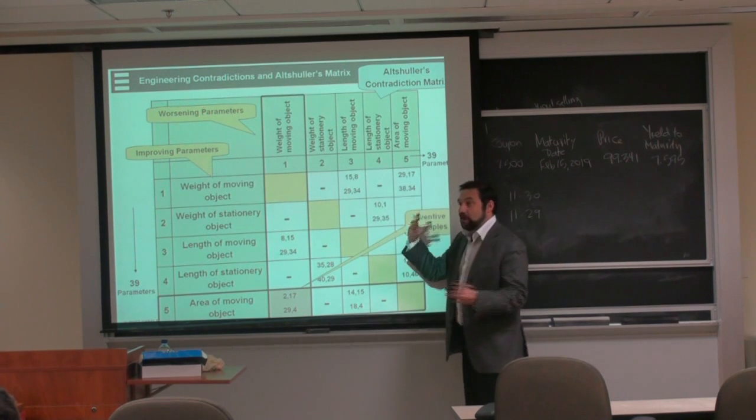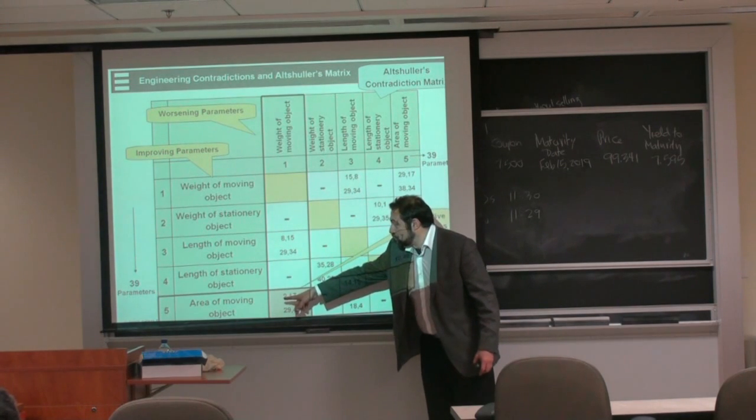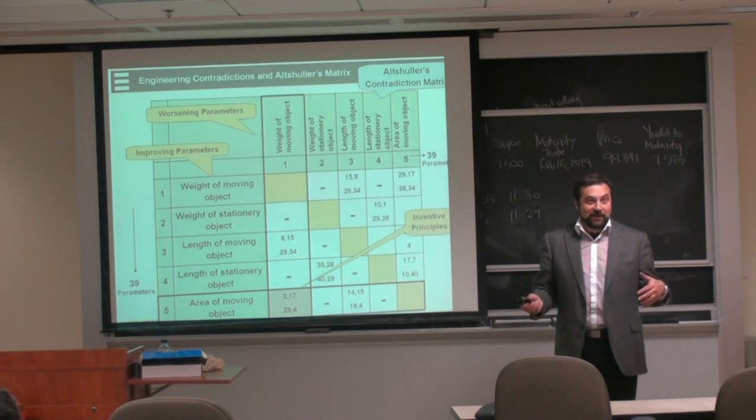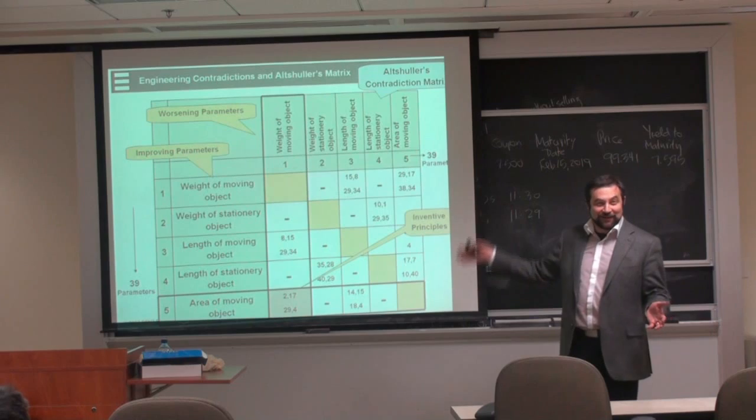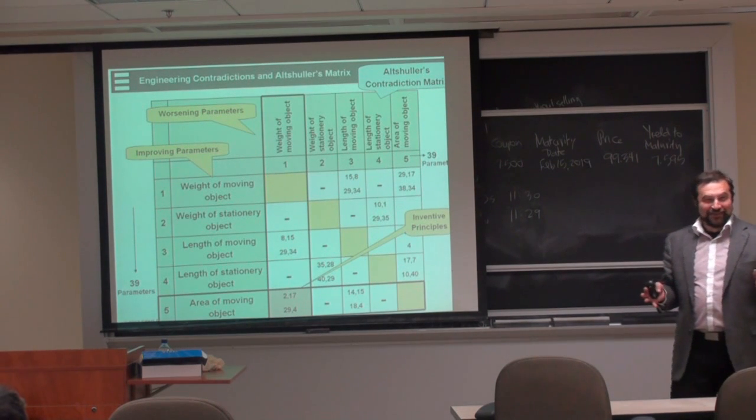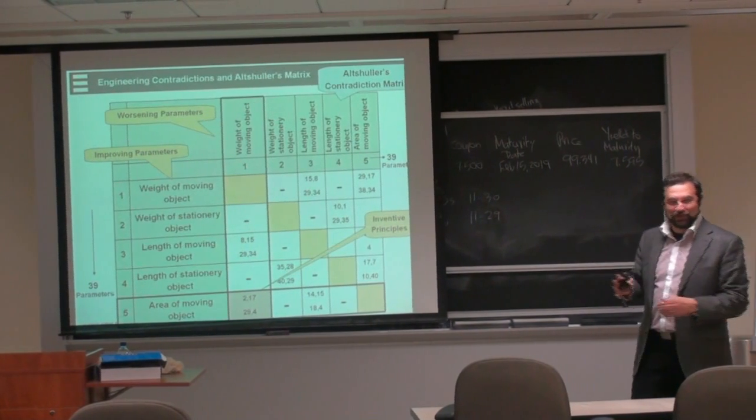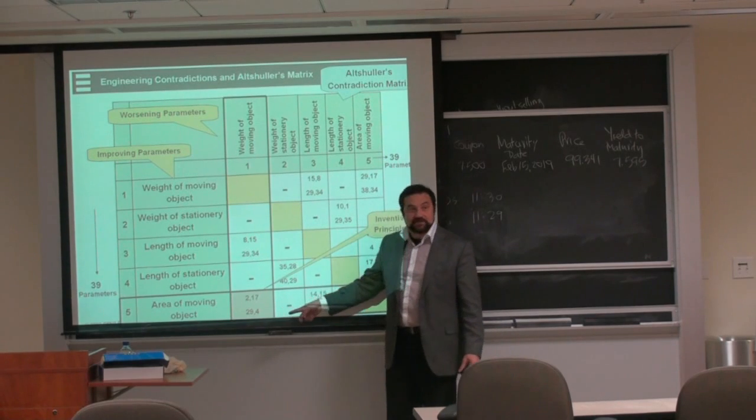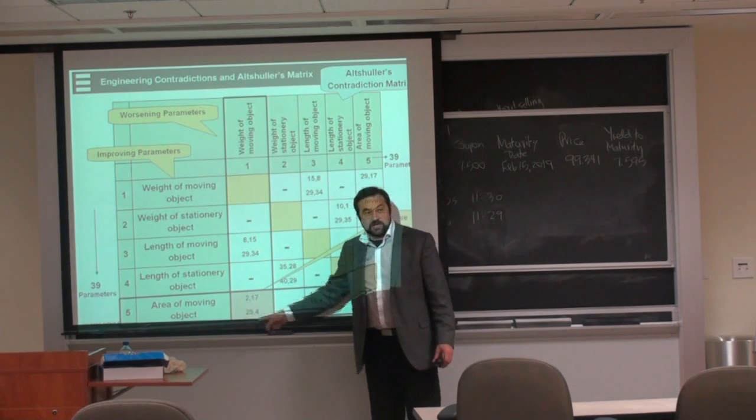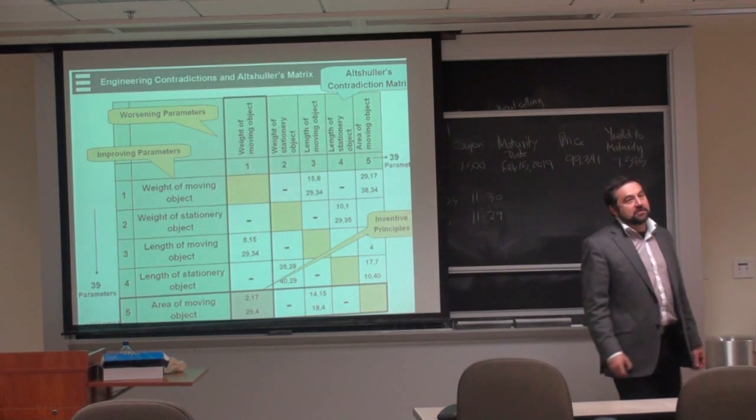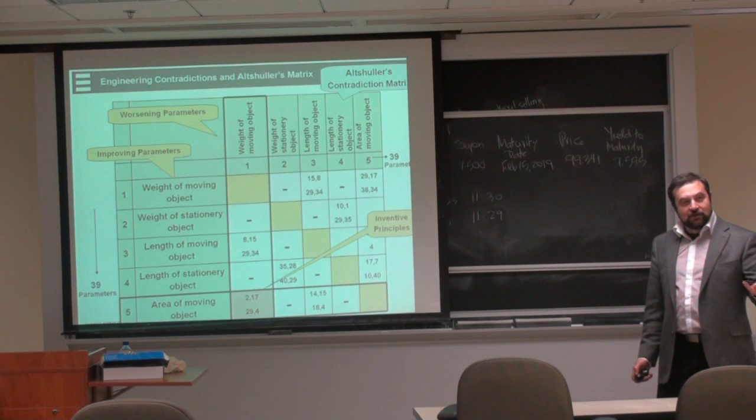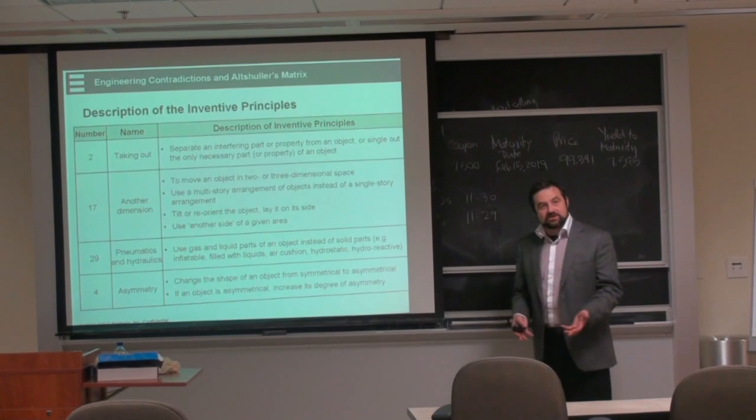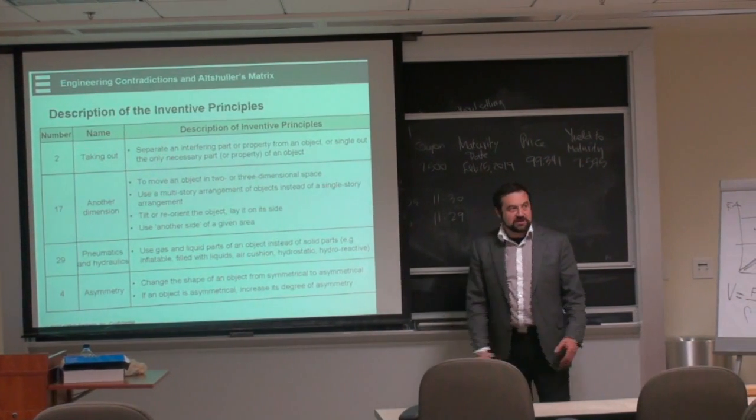And it turned out that you could generalize the solutions that people use. So, in interaction, the way how you use matrix, you say, if I improve area of a moving object. So, you take your specific problem and you generalize. And I must tell you that there is no problem that you cannot fit in this 39 general definitions. If anybody will find the problem, I will fit it in one of these squares. And then, on an intersection, you find the one that is worsening. Weight of moving object. And you see these strange numbers. These strange numbers represent inventive principles. Ways of solving these contradictions. Once again, generalize. Look at this definition. They are very generalized.